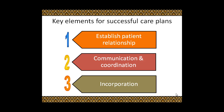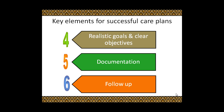Communication and coordination should involve the patient, physician, home care providers, and other family members. Third, incorporation: make sure that all medication use is incorporated into the plan, including prescription, non-prescription, and complementary medicine. Fourth, realistic goals and clear objectives: your goals should be realistic and objectives should be clear, with options to meet the patient's objectives and expectations.